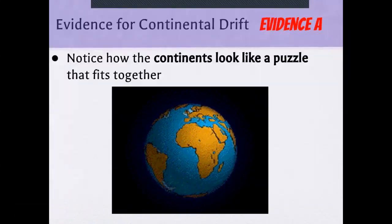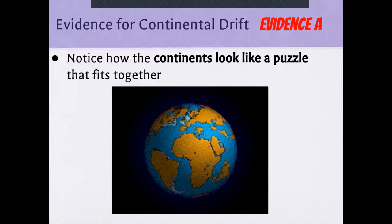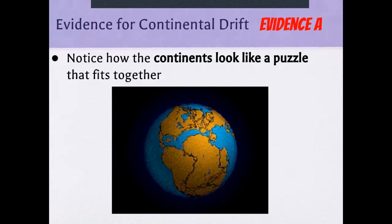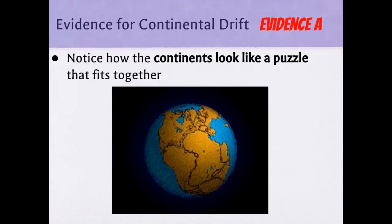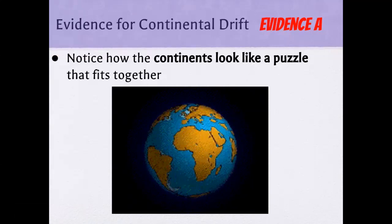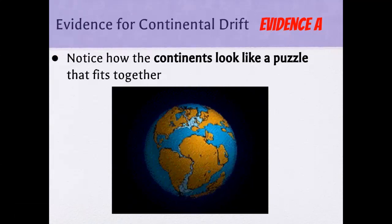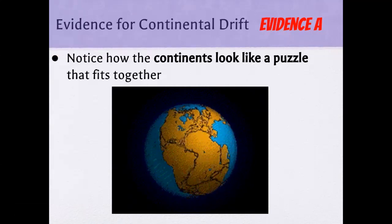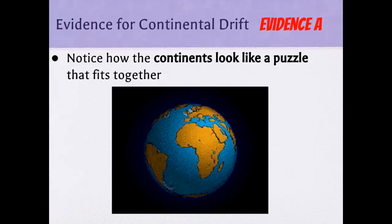There's evidence for continental drift. Evidence A: notice how the continents look like puzzle pieces that fit together. Alfred Wegener actually noticed how these pieces fit together and came up with the theory for Pangea and the movement of the crust.